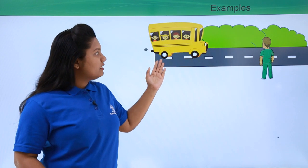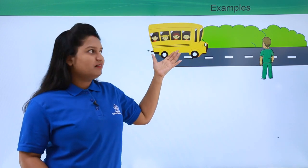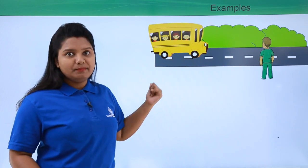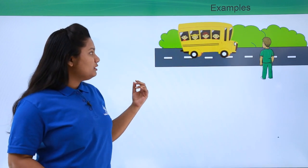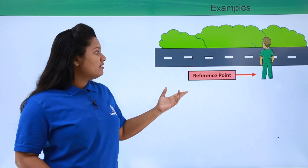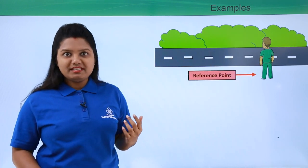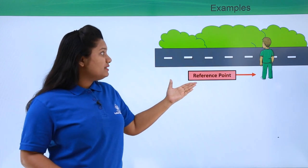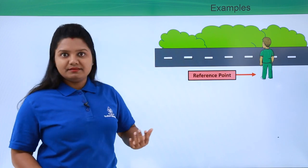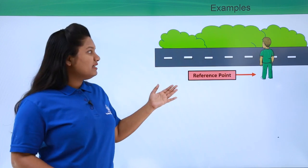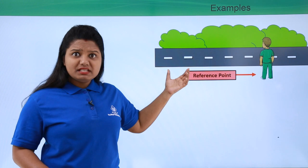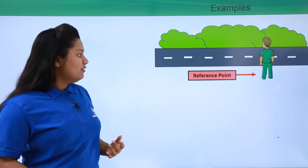To understand this, consider a straight road with a bus carrying children, and a boy standing outside looking at the bus. Initially the bus comes towards him and then goes away. If we consider the position of the boy to be our reference point, we say the bus was moving along with the kids — meaning the kids inside the bus were also moving with the bus.